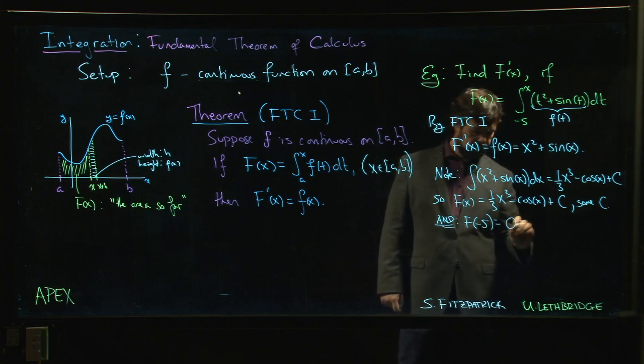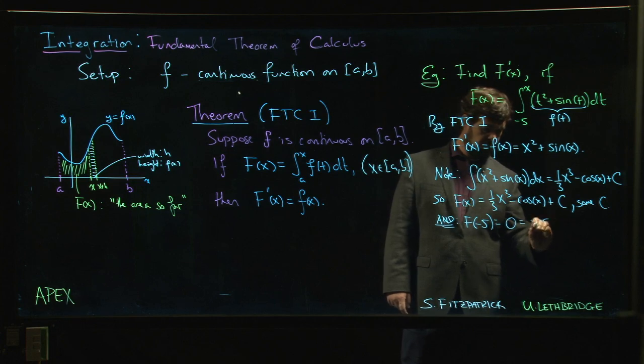So it's equal to zero on the one hand. On the other hand, it's equal to what? Minus 125 over three plus cosine of minus five plus c.